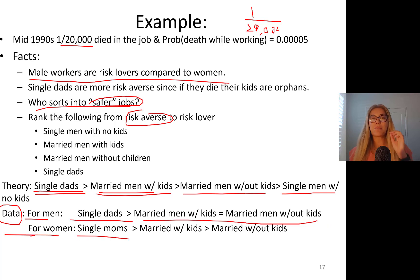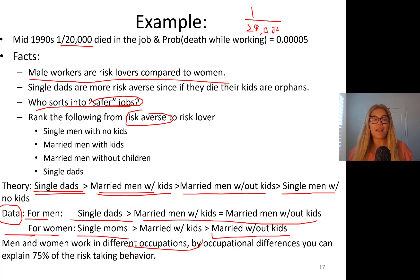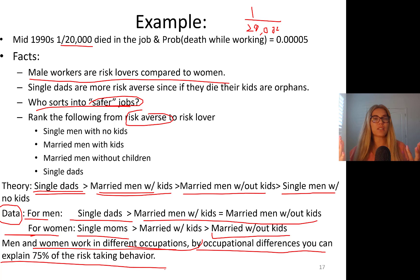For women: single moms are the most risk averse group, married women with kids are the second most risk averse, more risk tolerant are married women without kids, and the least risk averse group — the most risk loving — are single women with no kids. Men and women work in different occupations, and by occupational differences you can explain 75% of the risk-taking behavior. For example, I'm a professor — a very low-risk job — while a friend of mine works at an oil refinery, a much riskier occupation, and she is considered a more risk-loving type.